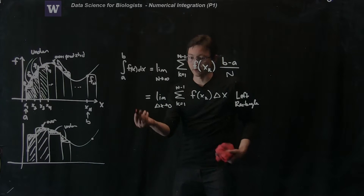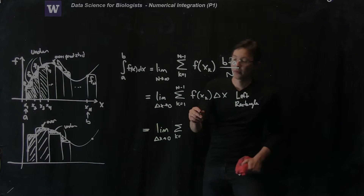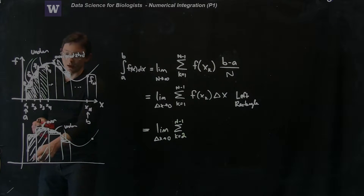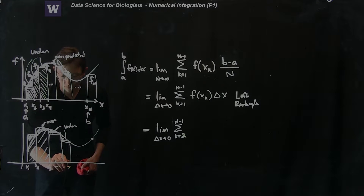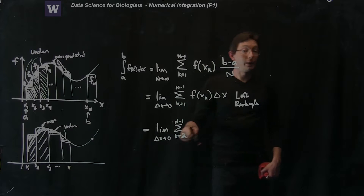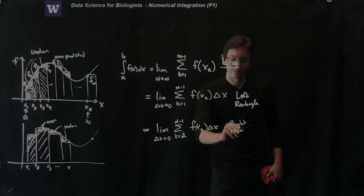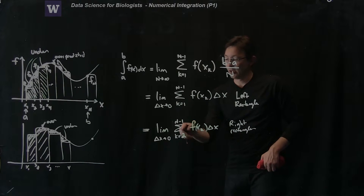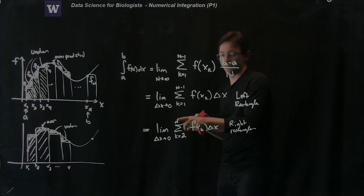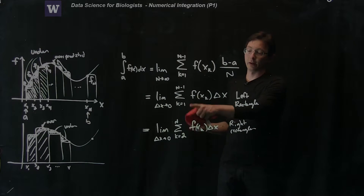So let's write down the right rectangle rule. This is the limit as delta x goes to 0 of the sum, but instead of summing from k equals 1 to n minus 1, I'm going to sum from k equals 2 to n — because the right point starts at x2, not x1. So now: f(xk) times delta x — this is the right rectangle rule. The only thing different between left and right is where my index starts: left starts at 1 and goes to n minus 1; right starts at 2 and goes all the way to the right boundary.